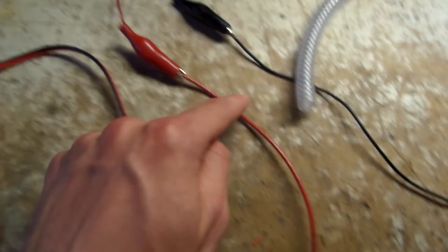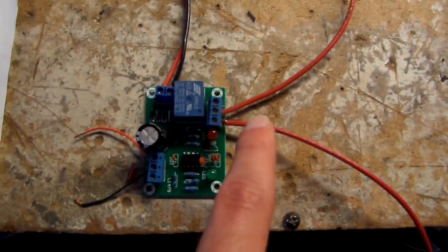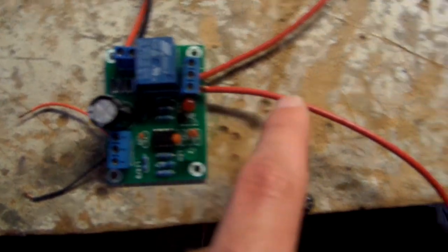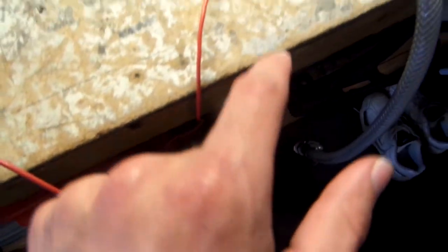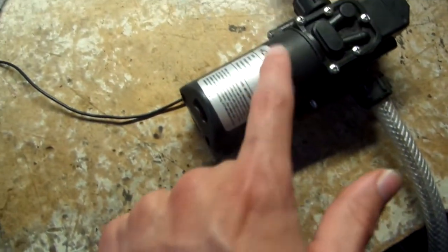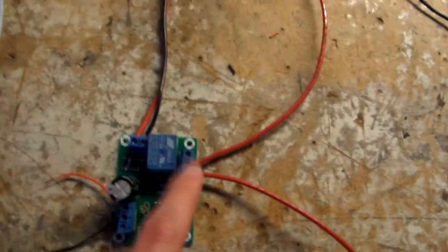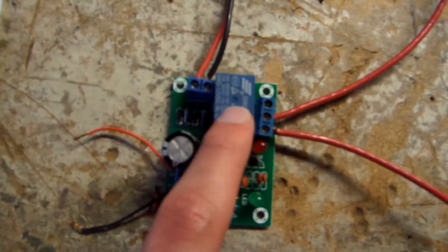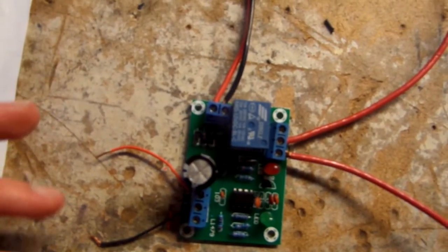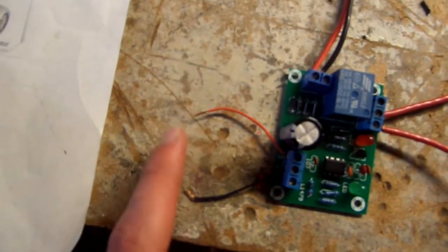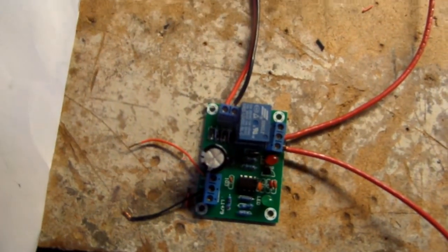As you can see here, this positive lead comes into the board, it goes in there and it comes out down there to connect to the positive connection on the pump. So this connection is broken, and this is a relay. Based on the water level in the boiler, based on the input from the water sensor, this relay will close or complete and break the water pump circuit to turn on and off the water pump.